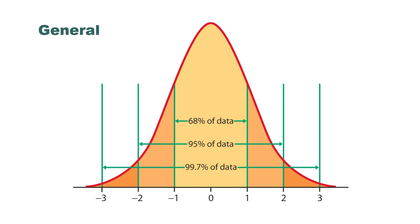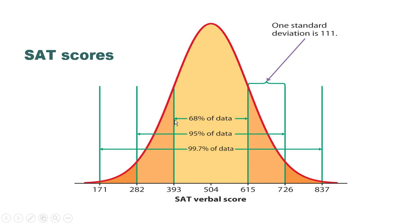We talk about the 68-95-99.7 rule. Between plus and minus one standard deviation, you have 68% of the data. Plus and minus two gives almost 95% — actually slightly more. Plus and minus three standard deviations gives 99.7%. If we apply this to a real situation with a mean of 504 and standard deviation of 111, 68% of observations should be between 393 and 615. For 95%, it would be between 282 and 726 — as long as the data really fit the normal distribution.